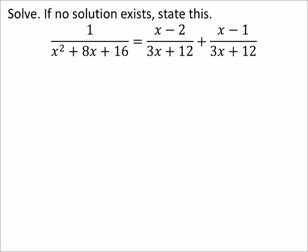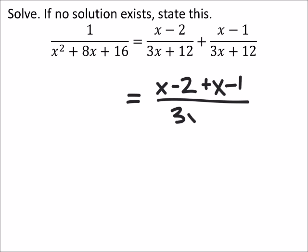So, if we wanted to rewrite this, if it's helpful anyways, we'd have x plus 2 plus x minus 1 all over the same denominator, 3x plus 12.